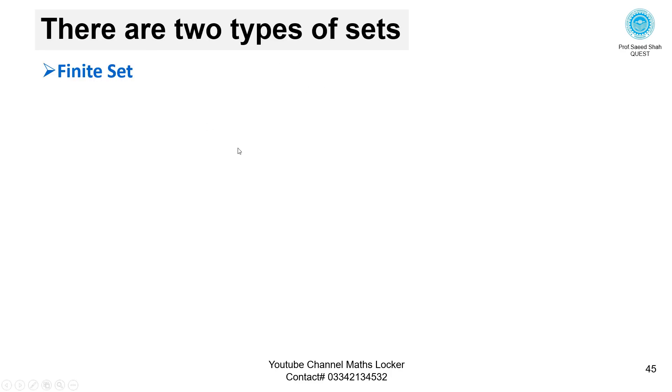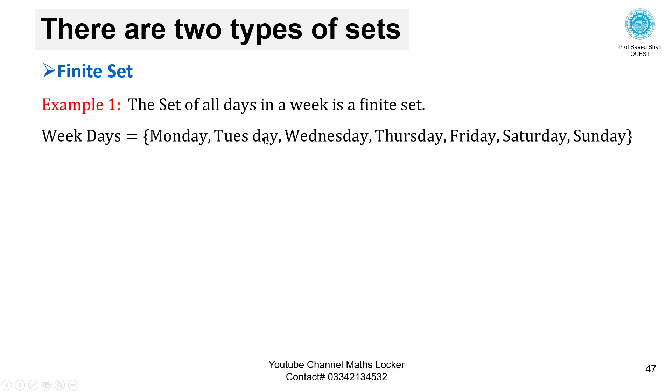There are two types of sets. Finite set: the set of our days in the week is a finite set. Week: Monday, Tuesday, Wednesday, Thursday, Friday, Saturday, Sunday. This is given by the mathematician. It's equal to curly bracket open 1, 2, 3, and three dots, close curly bracket.